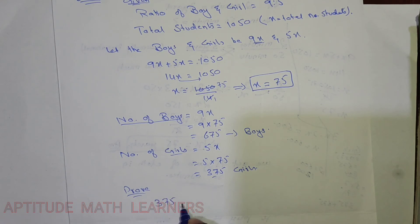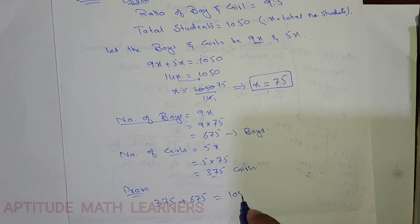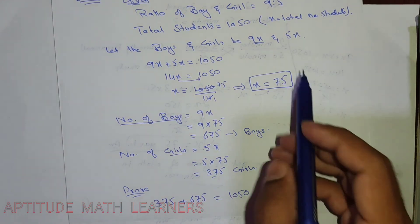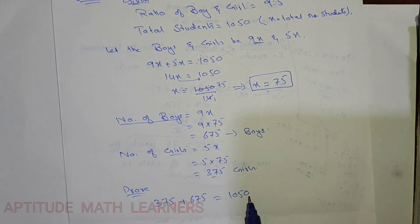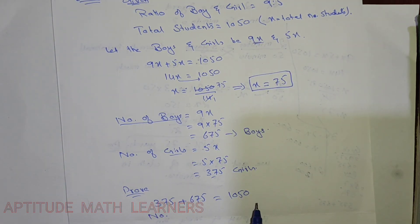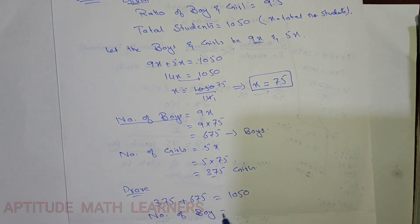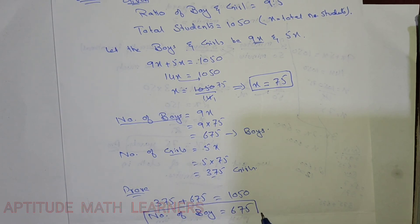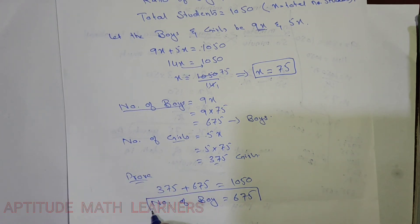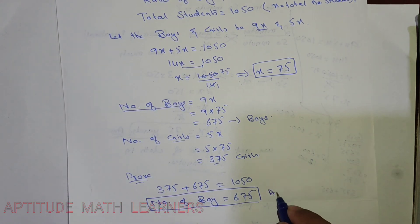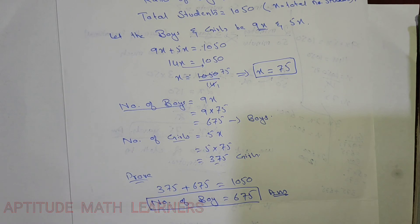So 375 plus 675 equals 1050, confirming the total number of students is 1050. The number of boys asked in the question is 675. This is our answer. Hope you have understood — please like and share. Thank you very much.